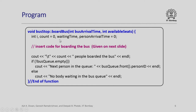Next is the more complex board_bus function, which implements boarding of the bus. This function has two parameters: the bus arrival time and the number of available seats. We initialize variables such as count to 0 and person arrival time to 0. The core boarding code is on the next slide. After the boarding code executes, we output the count — the number of people who have boarded — and if the bus queue is not empty, we print the next person in the queue who is still waiting, showing their person ID. Otherwise we say nobody is waiting.